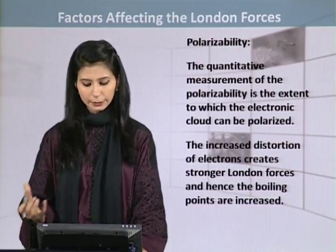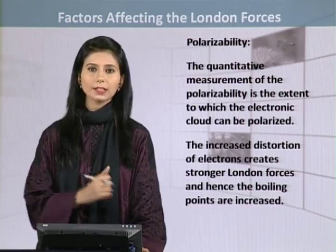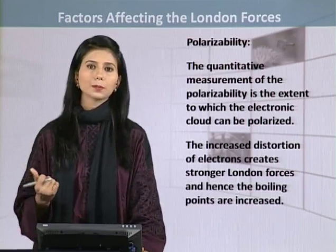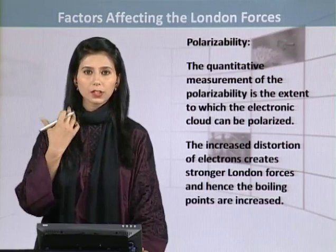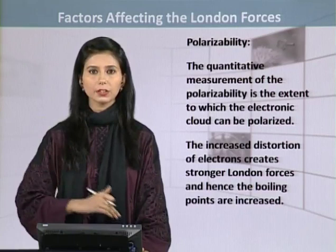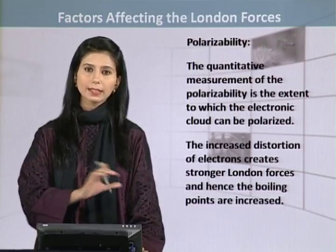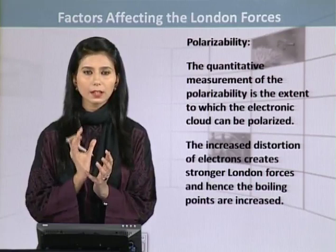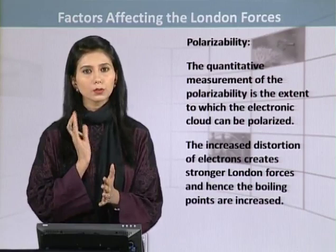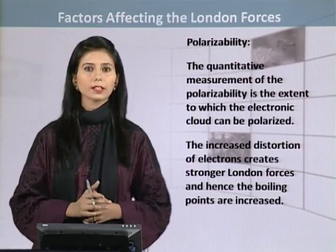The increased distortion of the electrons creates stronger London dispersion forces, hence the boiling points are increased. Thermodynamic properties are affected by strong intermolecular forces. If an atom or molecule has higher polarizability, meaning its electronic cloud is more easily disturbed or distorted, then London dispersion forces will more prominently prevail. London dispersion forces arise from an instantaneous dipole and an induced dipole. The symmetric sharing of electrons in a molecule or atom gets disturbed, and polarizability tells us to what extent this distortion is possible.